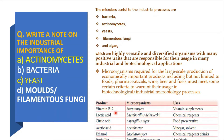For example, for products such as vitamin B12, streptomyces from actinomyces members are used as vitamin supplements. Similarly, lactic acid is used as a chemical reagent, synthesized from Lactobacillus delbrueckii. Citric acid is produced by Aspergillus niger and used as a food preservative. Ethanol is produced by Saccharomyces and used as a chemical reagent and drink. Penicillin is an antibiotic synthesized from Penicillium chrysogenum, which is a filamentous fungus. Like this, different types of products are synthesized using microorganisms at the industrial level.